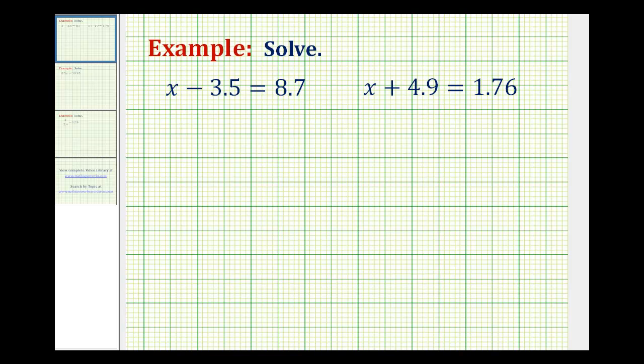So looking at this first equation, we want to manipulate it so it's in the form of x equals some number. Well right now on the left side we have x minus 3.5, so we want to undo this minus 3.5 by performing the opposite operation.